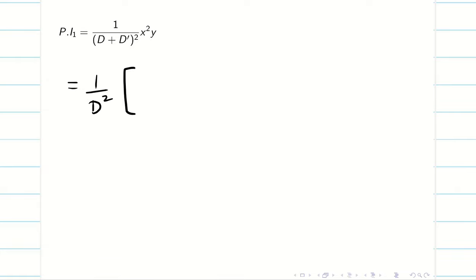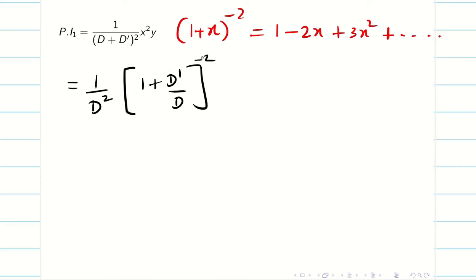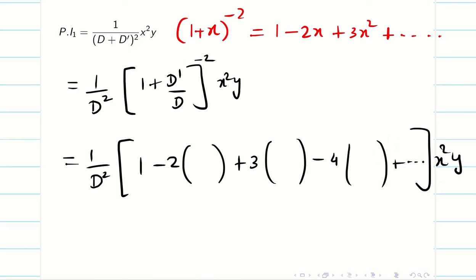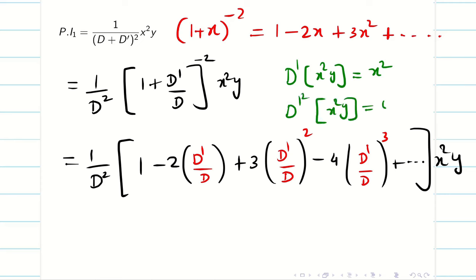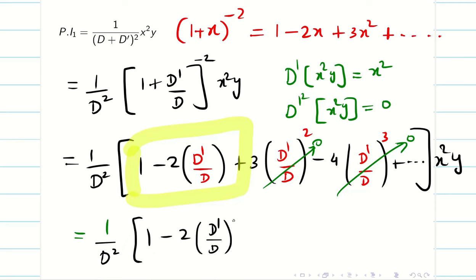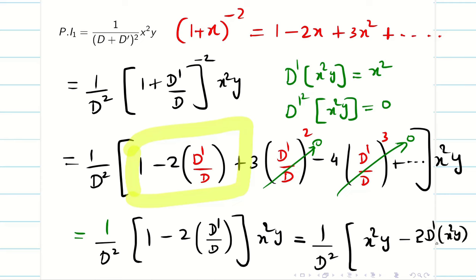Now I proceed with 1 by d square. Using the formula (1 plus x) power minus 2 equals 1 minus 2x plus 3x square, etc., this becomes (1/d square) times (1 plus d dash/d) power minus 2 of x square y. I rewrite this as (1/d square) times (1 minus 2(d dash/d) plus 3(d dash/d)squared, etc.) of x square y. Since d dash squared of x square y is 0, whatever terms involve d dash squared or higher become 0, and only two non-zero terms survive. So it simplifies to (1/d square) times (x square y minus 2 times d dash of x square y, all divided by d).